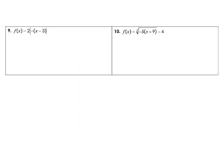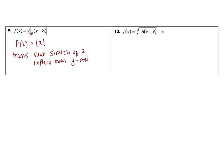The parent function for number 9 is your absolute value function. And then our transformations – we have a few things going on here. The first one – we have this 2 on the outside, so we have a vertical stretch of 2. Then we have a negative inside of the function, so we are reflecting over the y-axis. And then we will move to the right 3.